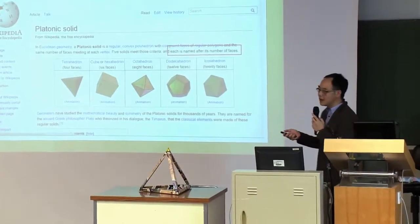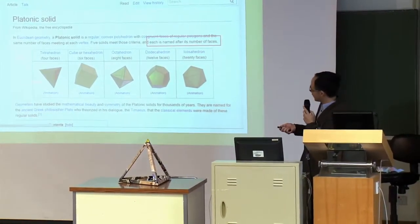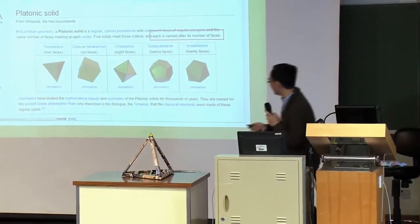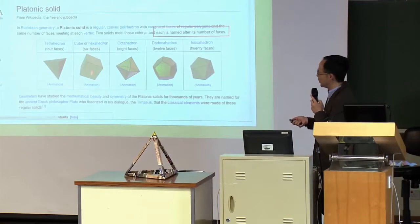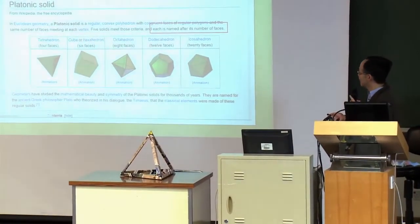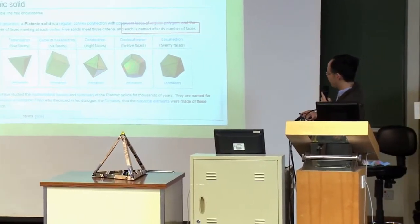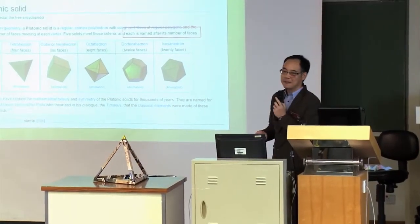For convenience, we name these solids after the number of faces. This one with four faces is called a tetrahedron, because 'tetra' means four. The next one is a cube — sometimes called a hexahedron — with six faces. Then we have eight faces, twelve faces, and twenty faces. If you are brave and happen to find a sixth one, please tell me — you will be very famous. But unfortunately, mathematical proofs have confirmed that there can only be five of them.